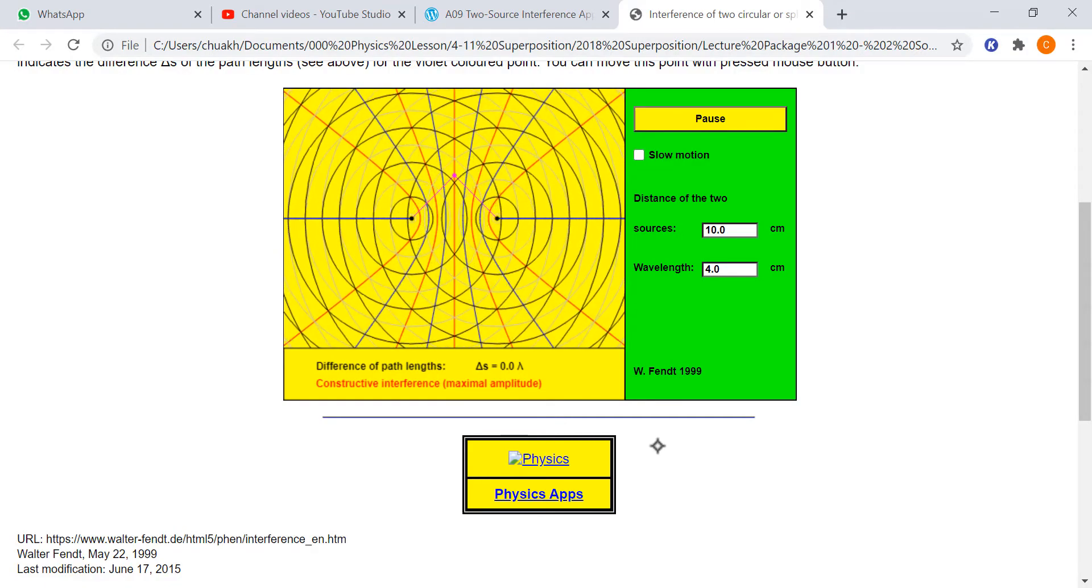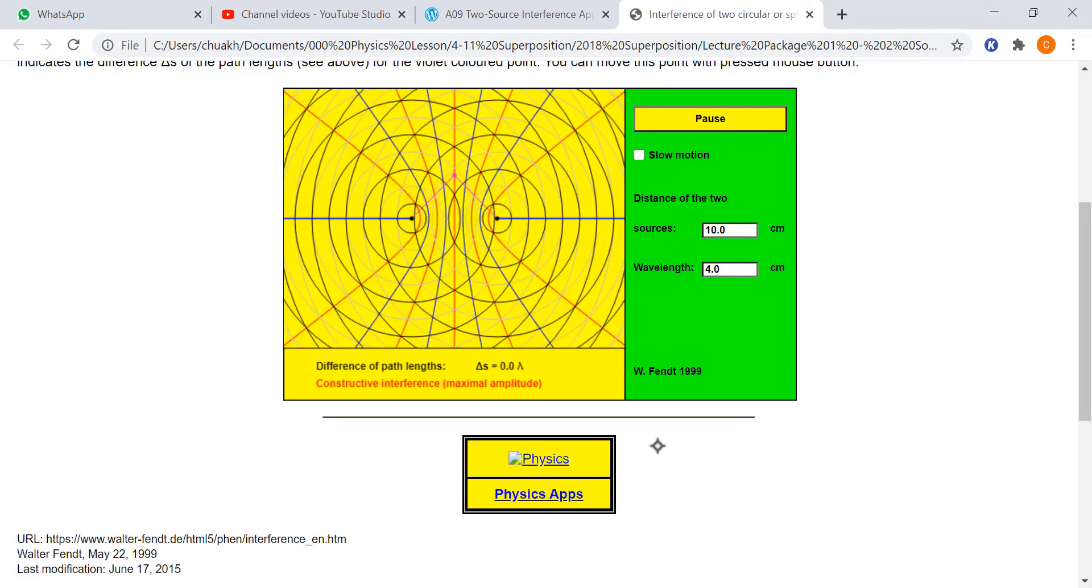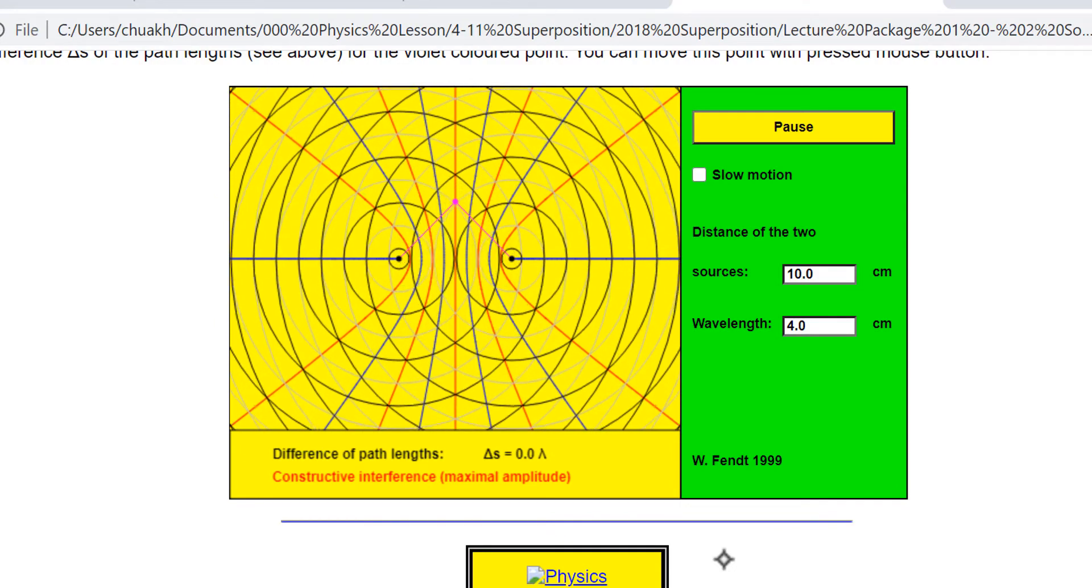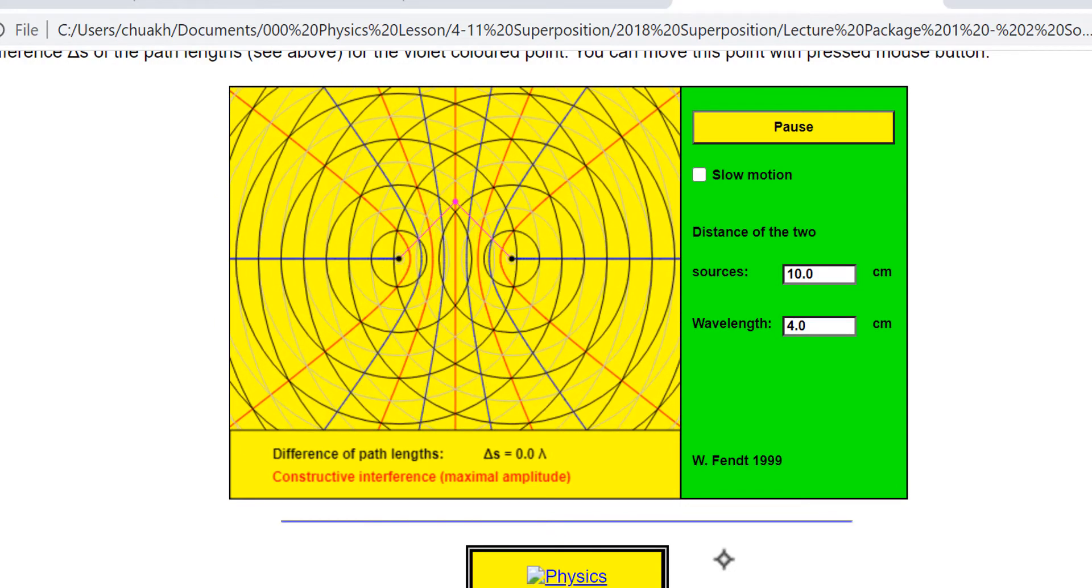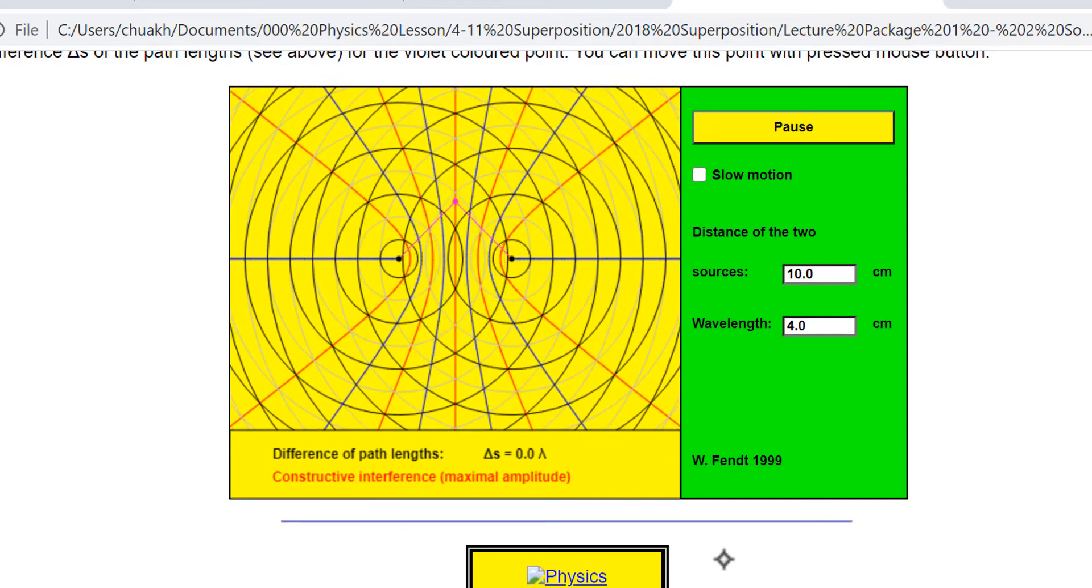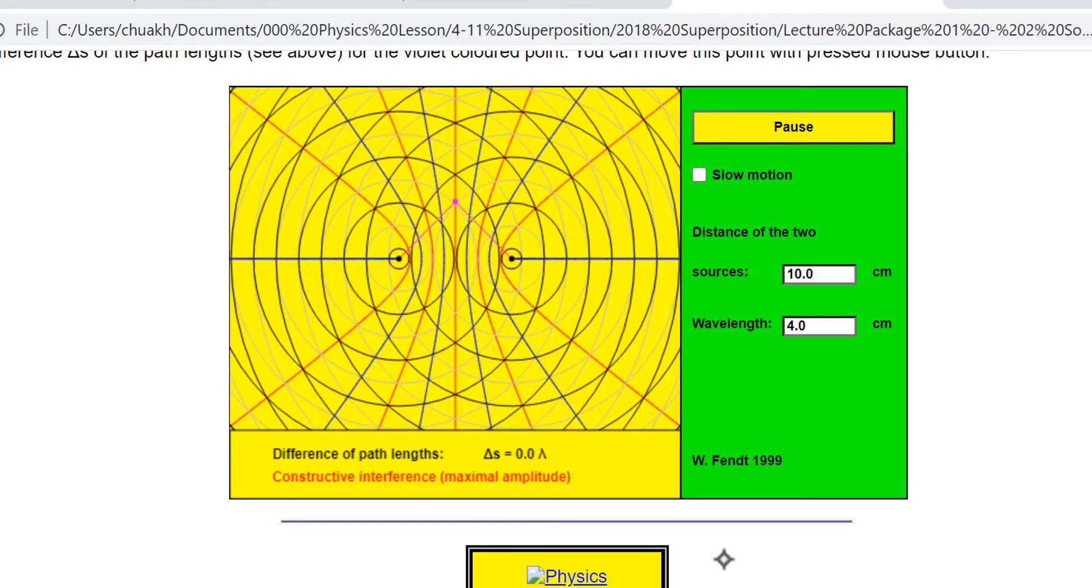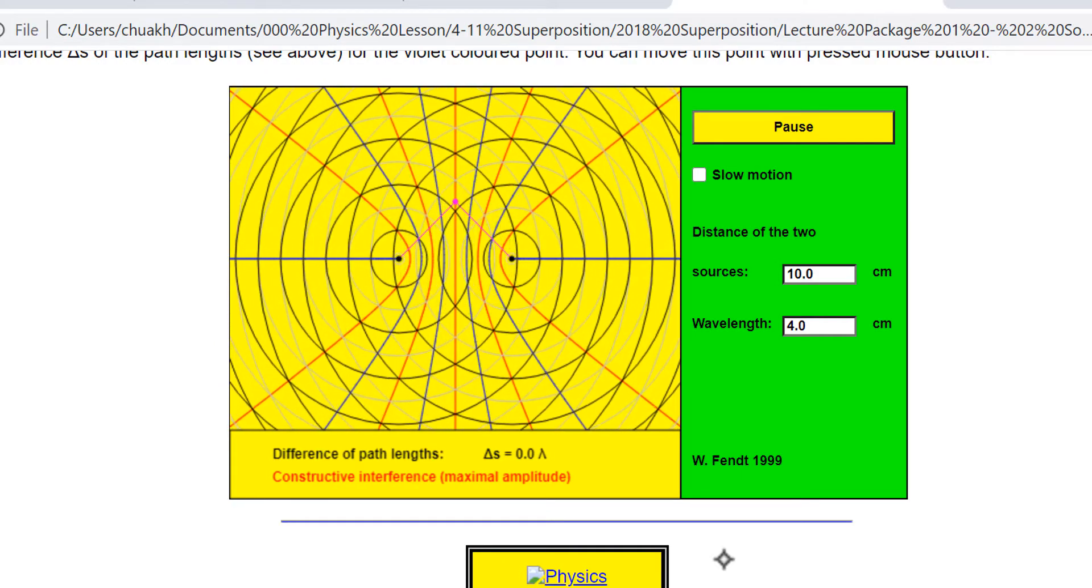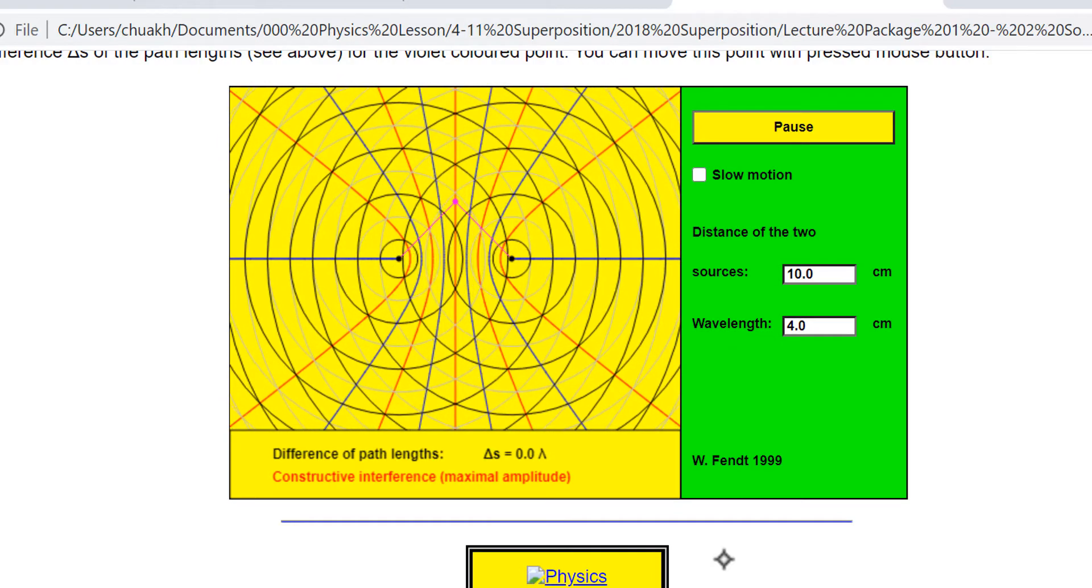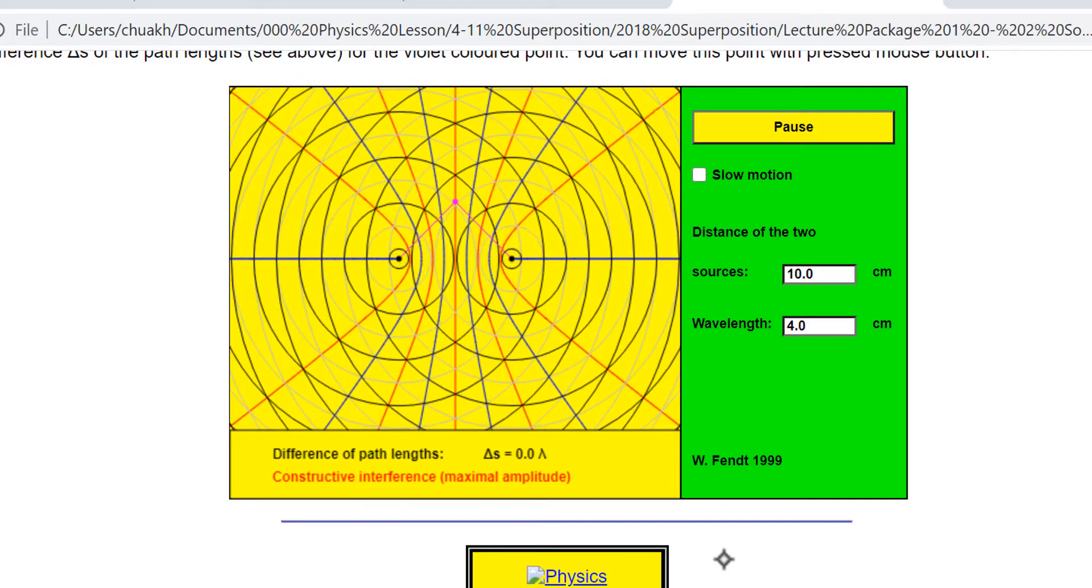This is another applet by Walter Fendt. This one is pretty good too. What is drawn here is the black lines represent the crest. And you can see a fainter line. That one represents the troughs, right? So this one is a bit different from the one I have in my lecture notes. They drew both the crests and the troughs.